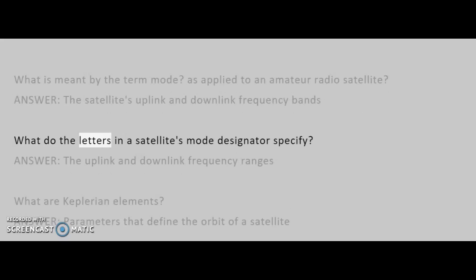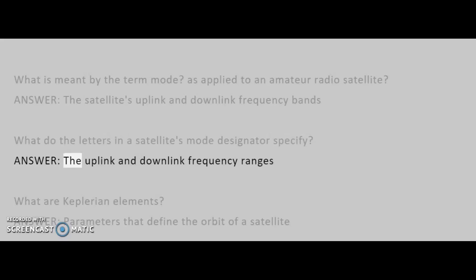What do the letters in a satellite's mode designator specify? Answer: The uplink and downlink frequency ranges.